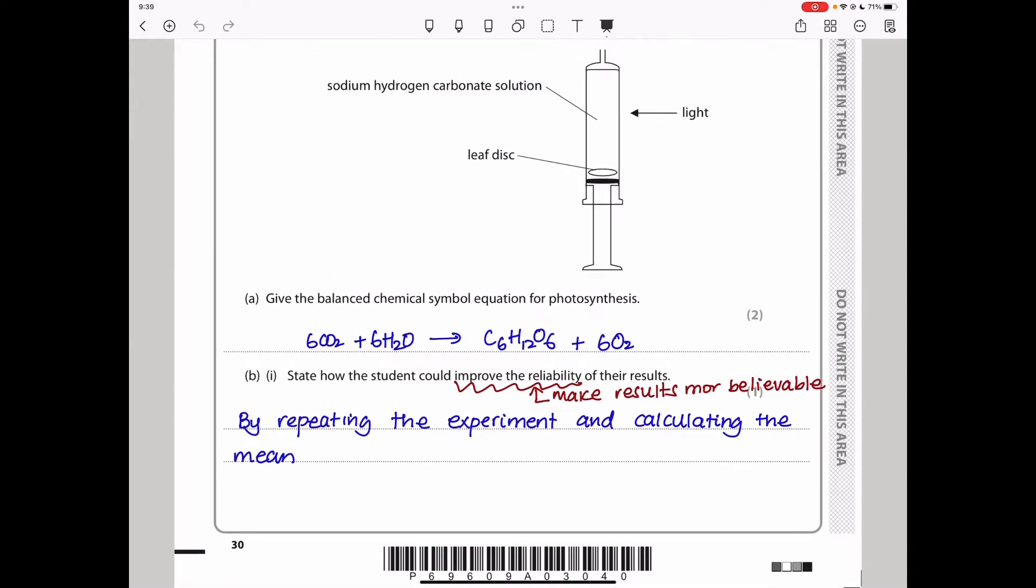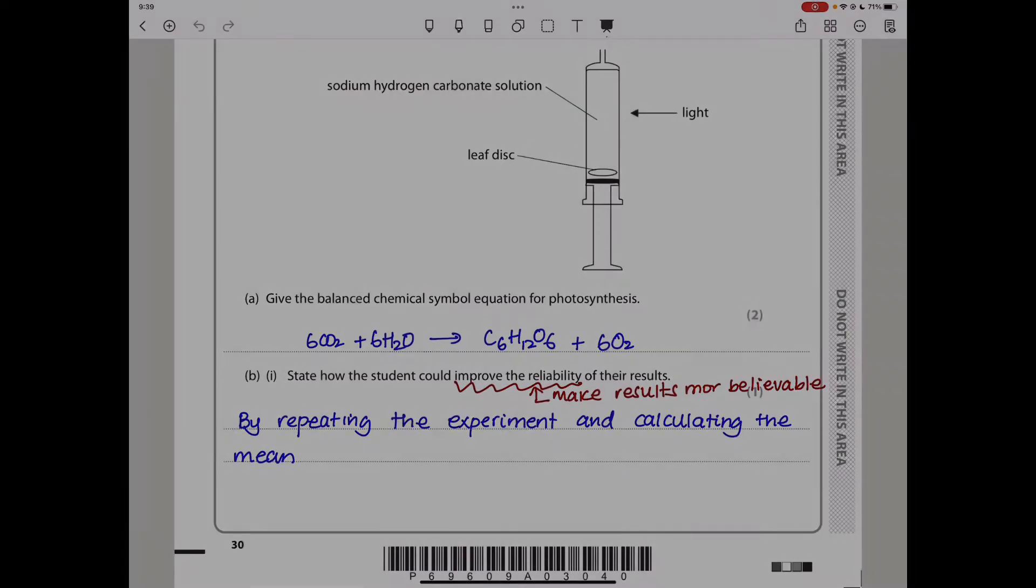State how the student could improve the reliability of their results. We have to repeat the experiment and calculate the mean in order for the results to be reliable.